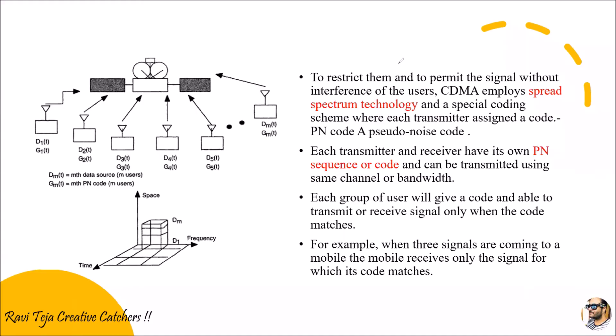Only when our code matches the satellite's code will the satellite be able to receive that particular signal and recognize that the signal came from a specific person or earth station. It then gathers the required information and sends that information back to us.